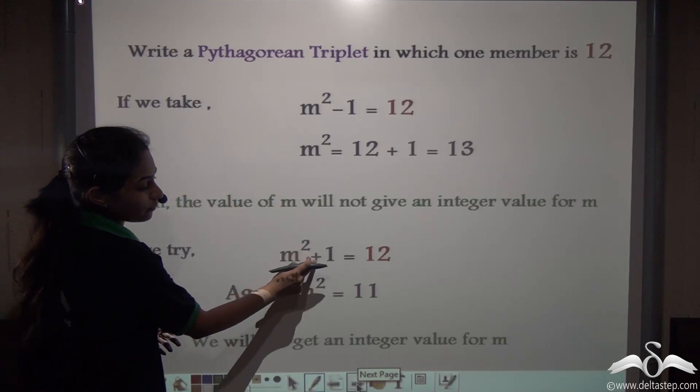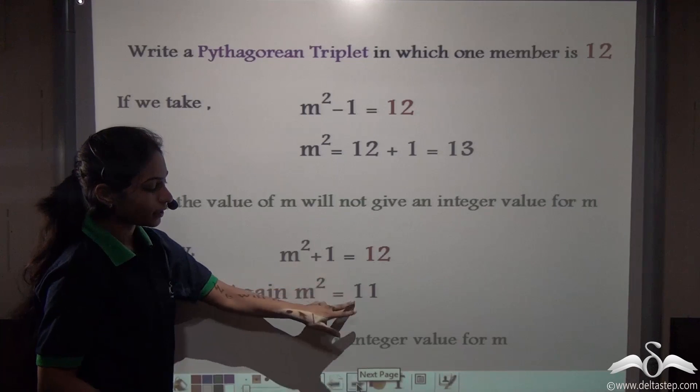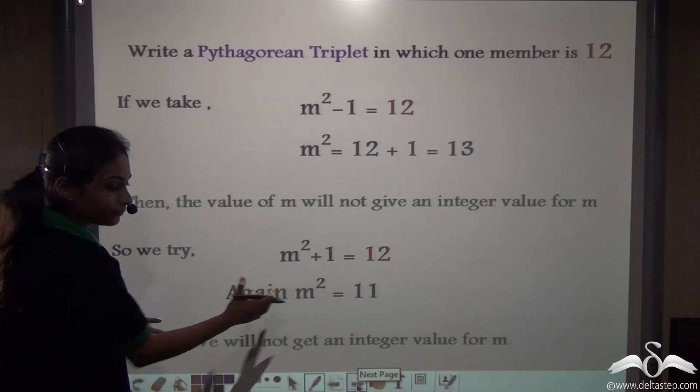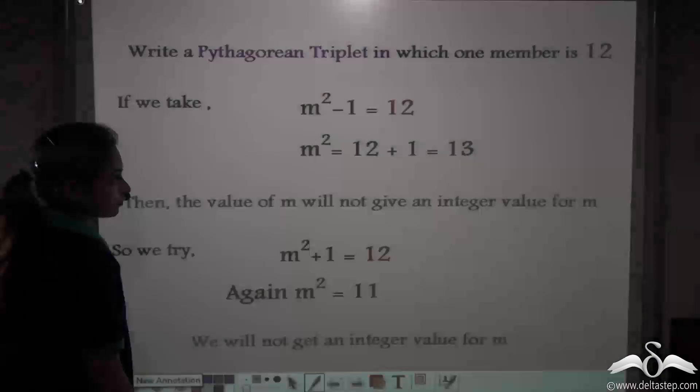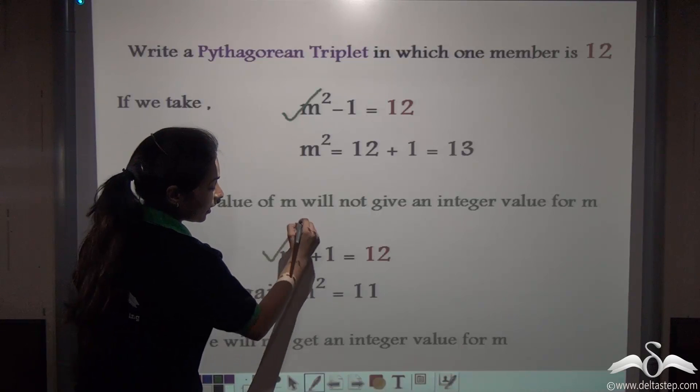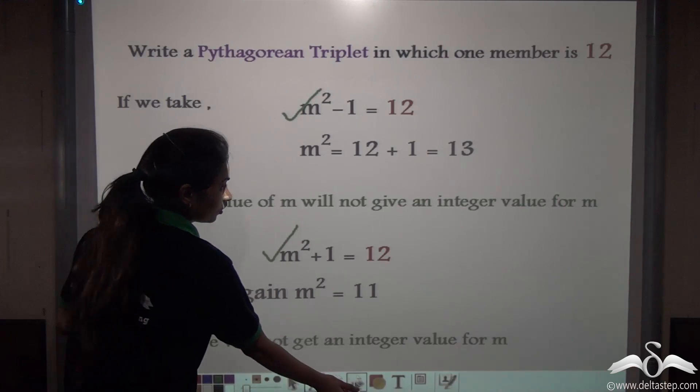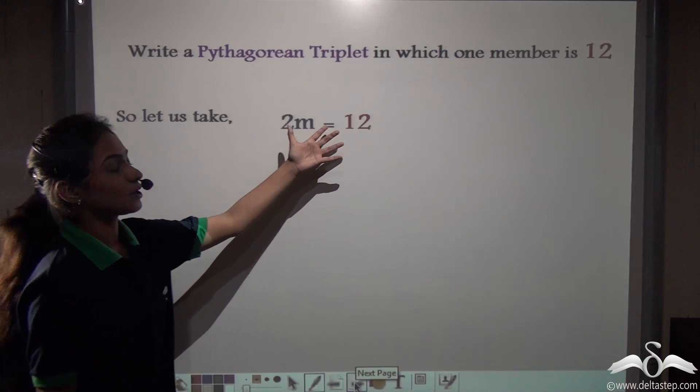Let us try m squared plus 1 as 12. What do you get? m squared is equal to 12 minus 1, which is 11. So again you will not get an integer value for m. So what do we do? We have tried out m squared minus 1 and we have tried out m squared plus 1. So the only option left is 2m. So let us take 2m is equal to 12.